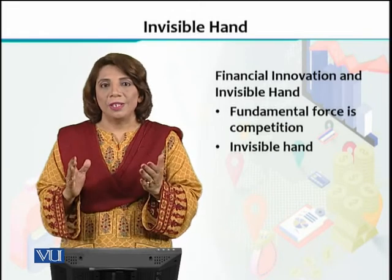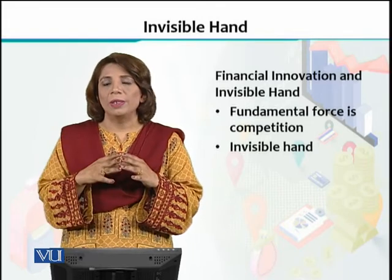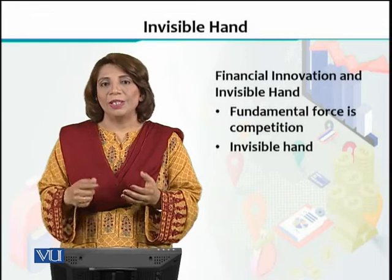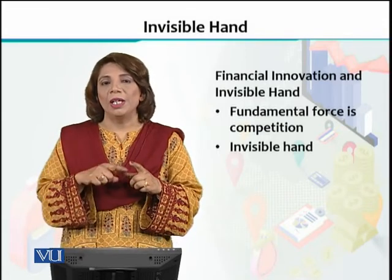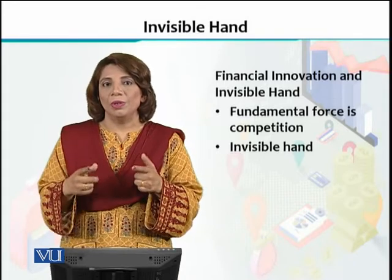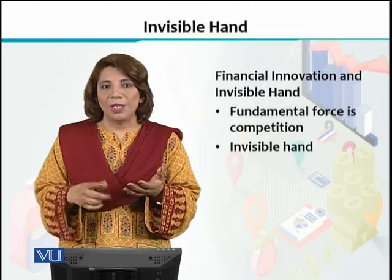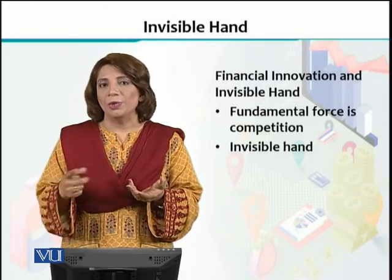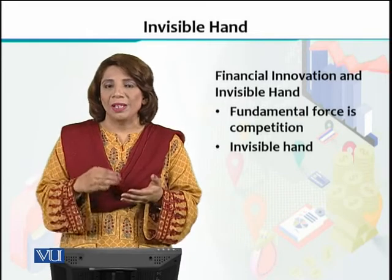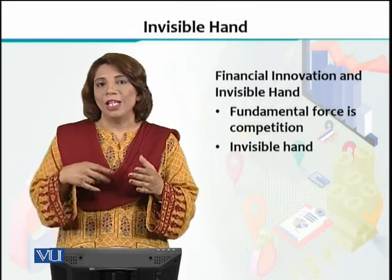He mentioned that the invisible hand is basically the force of competition that is not visible. For example, if the price of any product is very high, and someone did an innovation — built a special kind of thing, like an iPad or an Android phone — when people see the features of the Android phone, they are impressed. Many kinds of apps can be installed, providing different kinds of conveniences like Google Maps for directions, Uber/Careem booking, and weather information. All these facilities are available through different applications, and for that you need an Android phone.